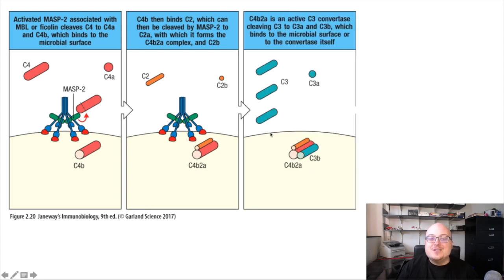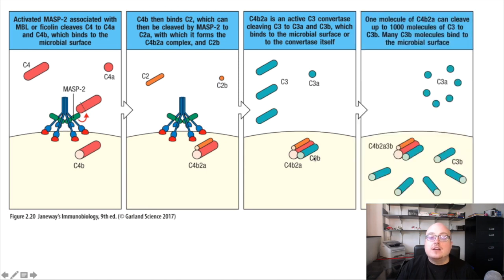So the C3 convertase can recruit C3, cleave it into C3A which floats away, and C3B stays attached. And the C3 convertase in all of the pathways, an important thing to know about it, is that it's really efficient. It can really chew through a lot of C3. And so when we form a C3 convertase through any of the pathways, a lot of C3 gets cleaved, and that means a lot of C3B gets stuck to the surface of the cell, a lot of C3A gets released to induce inflammation. And so this is a way that these pathways amplify themselves. It's a feed-forward loop basically, and that's an important way of how they function.